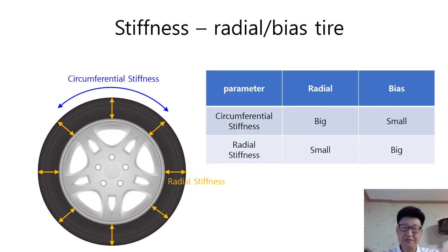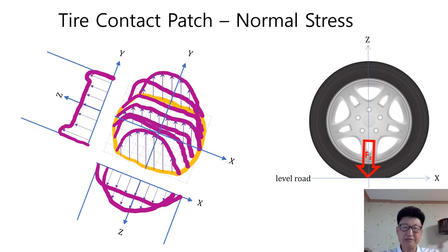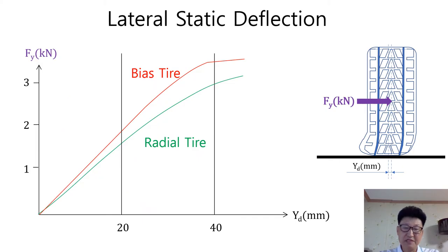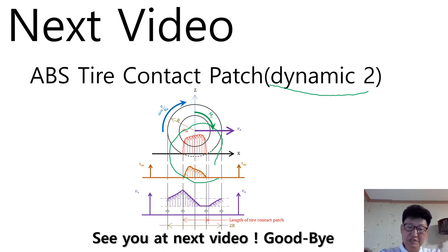If you watch the previous videos, you can easily understand the upcoming videos. I explain the tire stiffness of radial and bias tires respectively, the normal stress in the tire contact patch when the tire is standstill on a level road, and the tire stiffness depending on various degrees of freedom. The next video will be Tire Contact Patch Dynamic Part 2, where I will explain stress distribution and longitudinal slip speed. See you next video. Goodbye, guys.